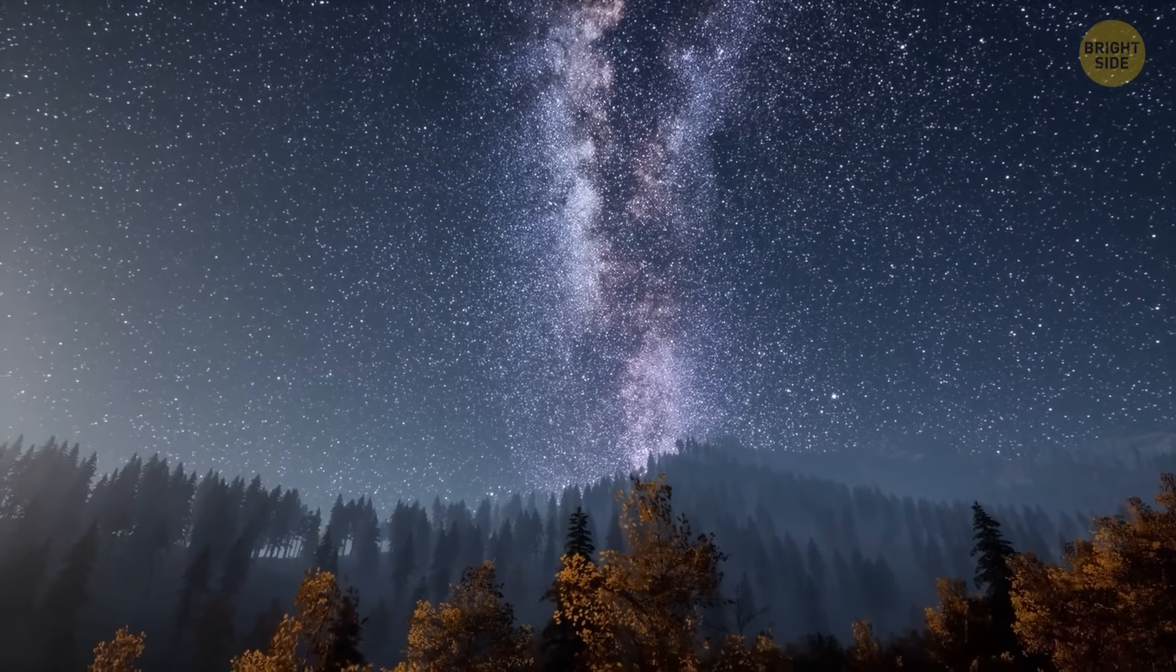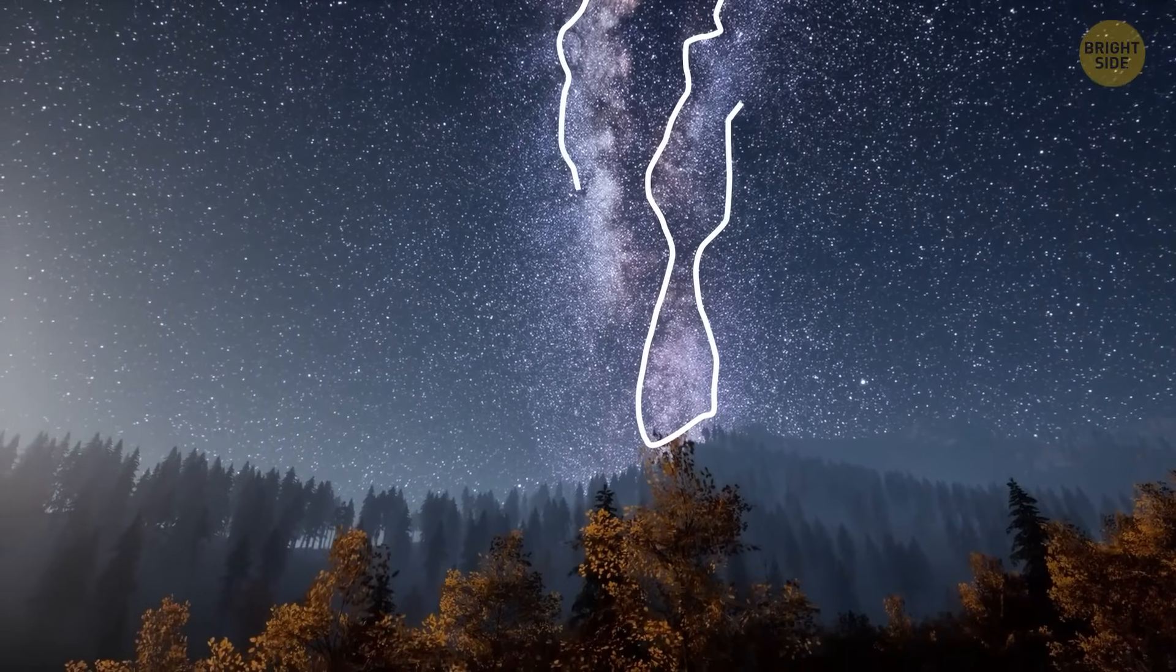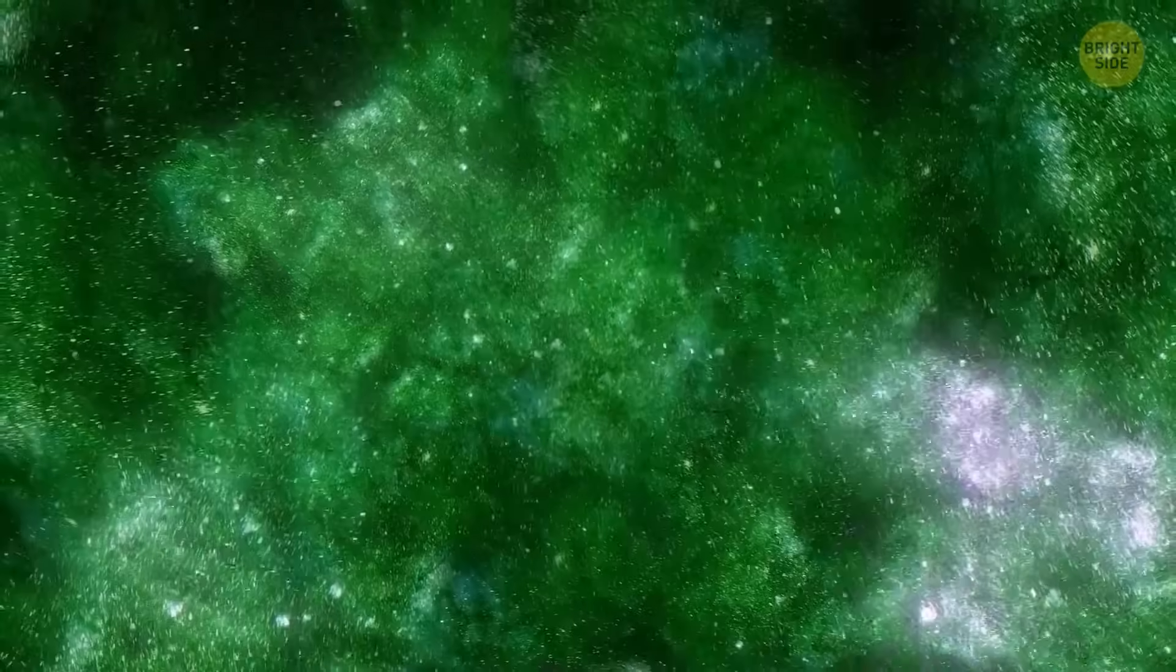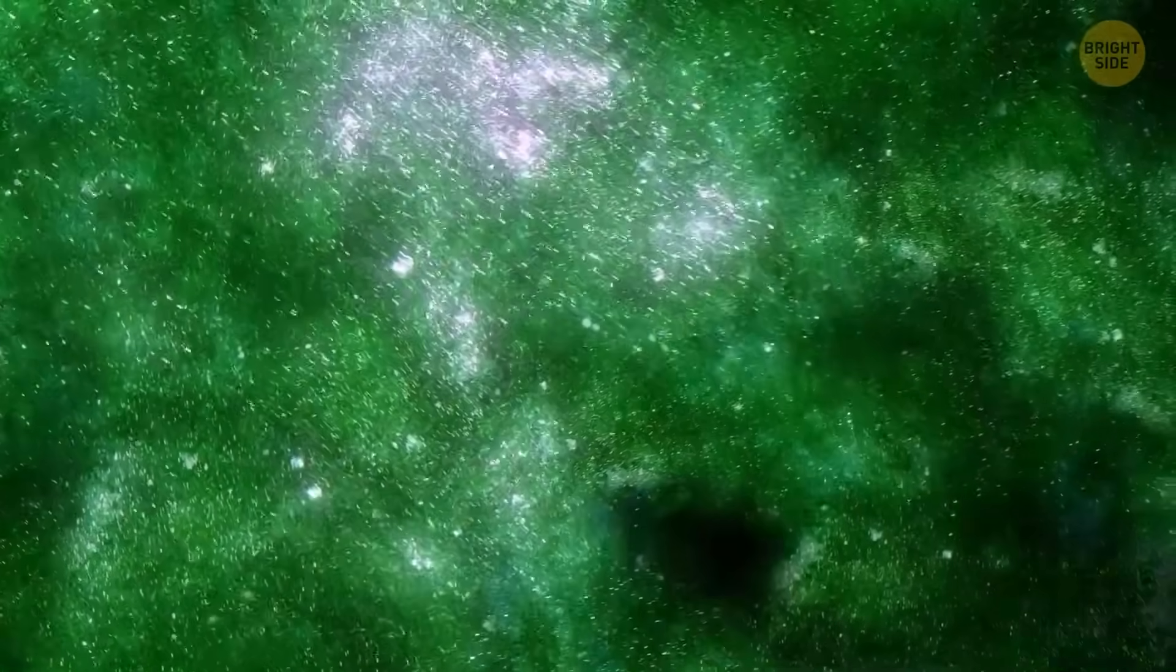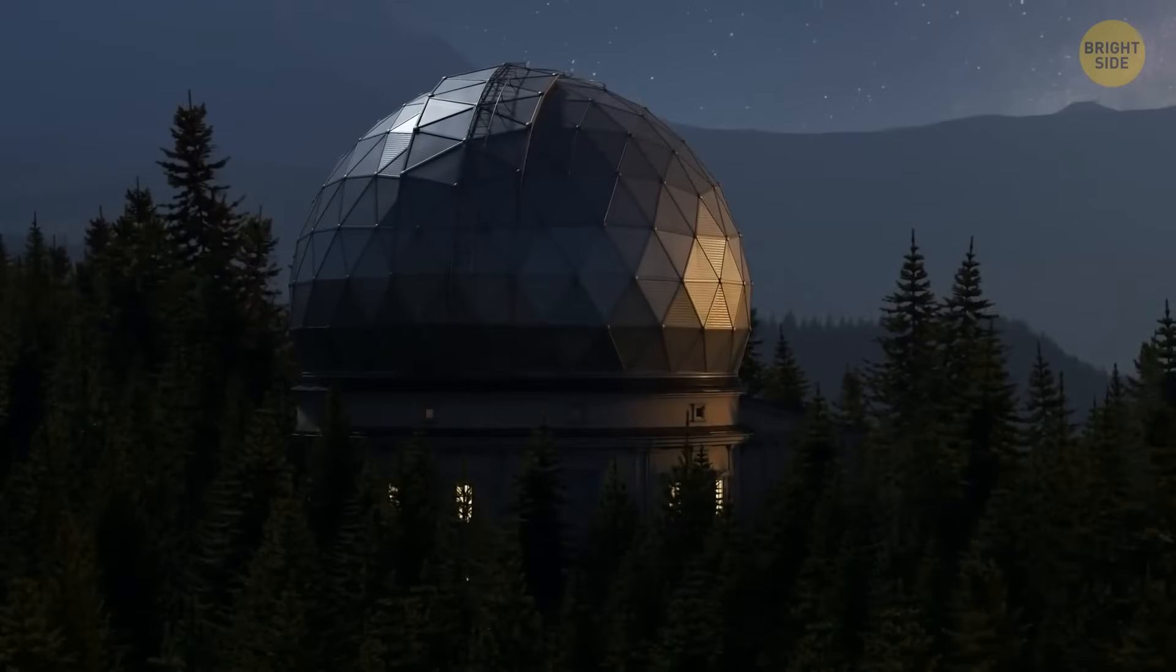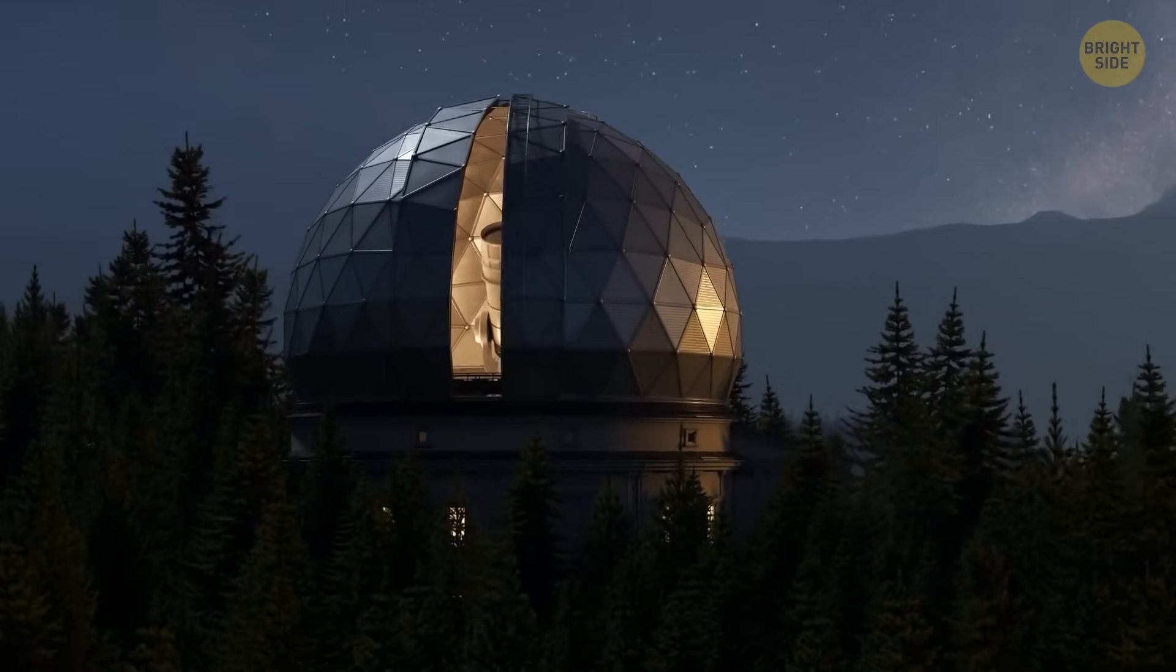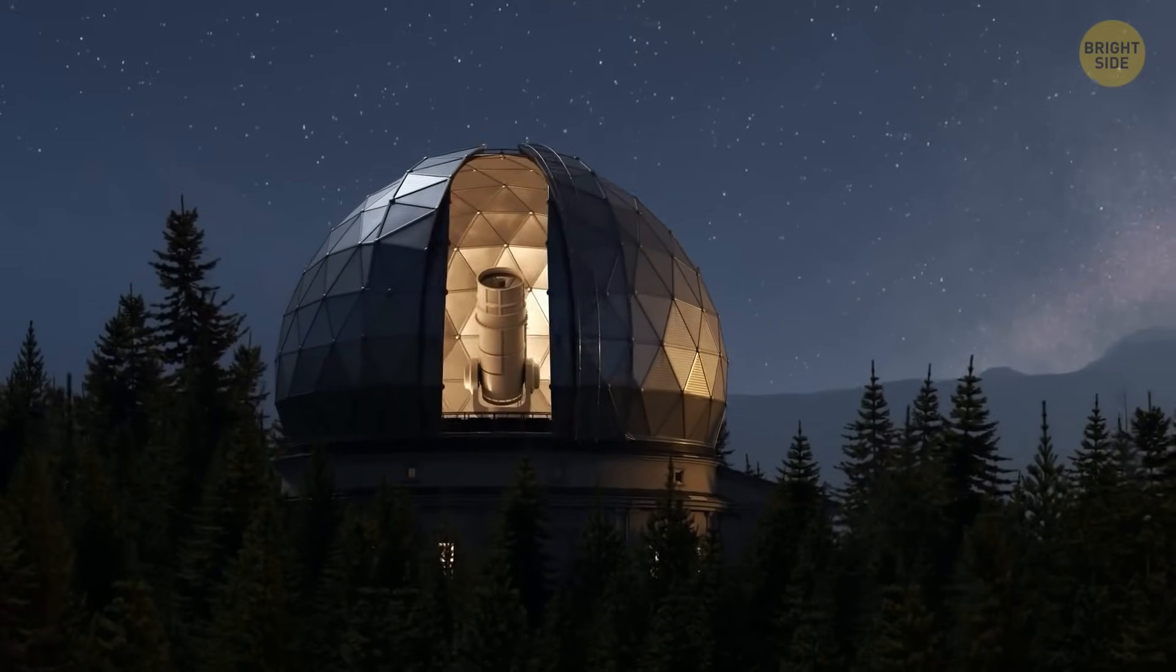The x-ray-emitting gas forms a glowing layer around the Milky Way's disk. This layer never disappears due to the star formation and supernova activity happening in the galaxy. Together, these processes explain both the absorbing and emitting signals observed by astronomers.